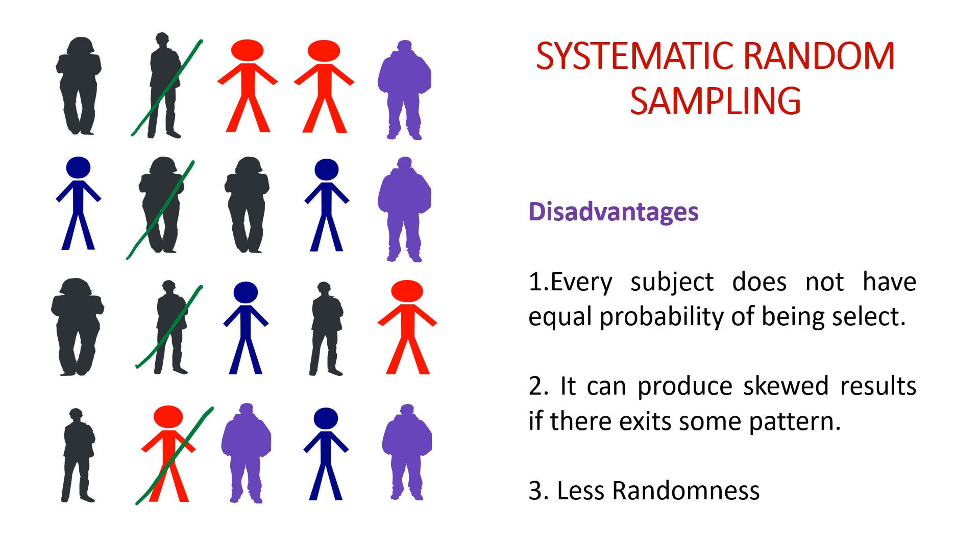In Systematic Random Sampling we come across many drawbacks which we need to be taken care of. Every subject does not have equal probability of being selected. As we are using a fixed interval, this 3rd member, 4th member, 5th member, 6th member does not have the same probability of being selected.